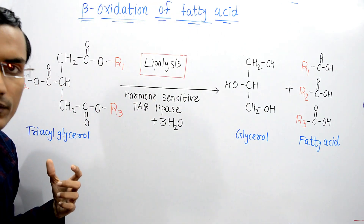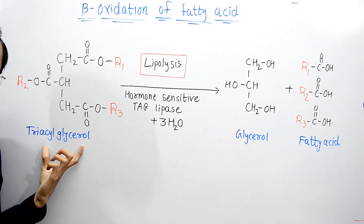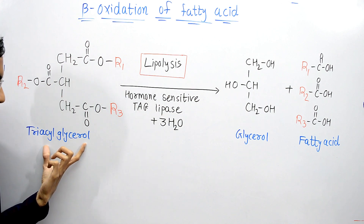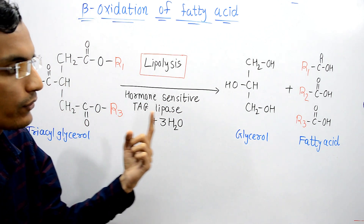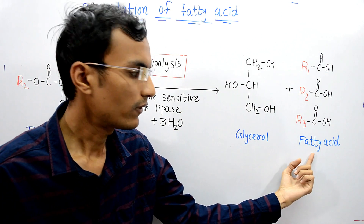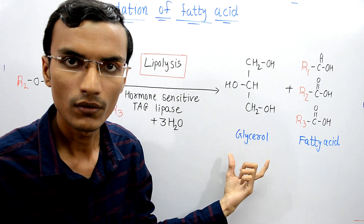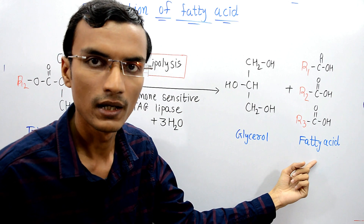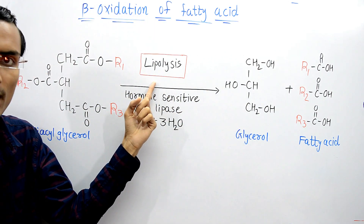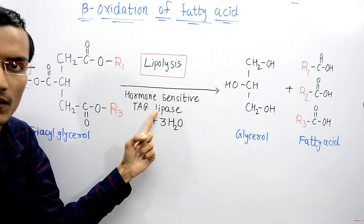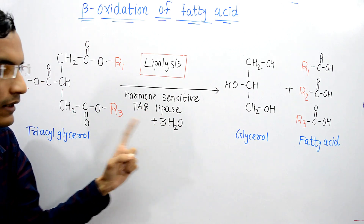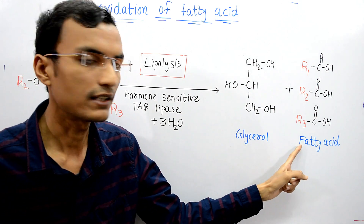Lipids are mainly stored as triacylglycerol in adipose tissues, as far as human beings or vertebrate animals are concerned. This triacylglycerol is broken down into glycerol and fatty acids — first diacylglycerol, then monoacylglycerol, and finally glycerol and three fatty acid molecules. This process is known as lipolysis, catalyzed by the enzyme hormone-sensitive triacylglycerol lipase, which requires three water molecules.